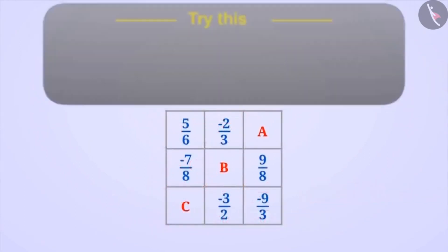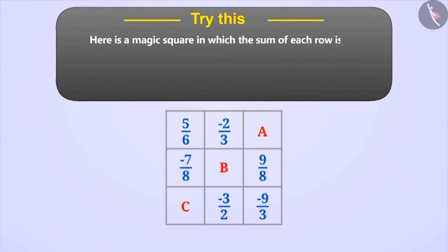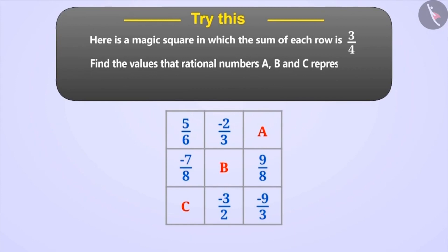Try this: here is a magic square in which the sum of each row is 3/4. Find the values that rational numbers A, B, and C represent.